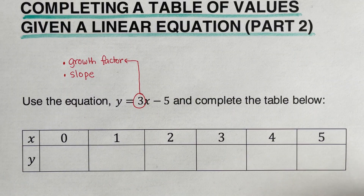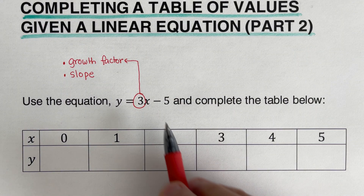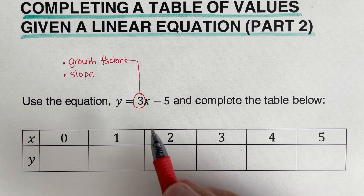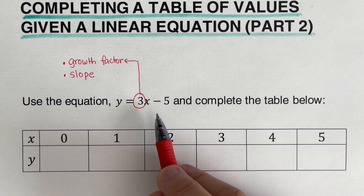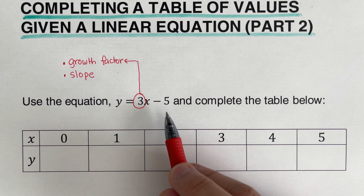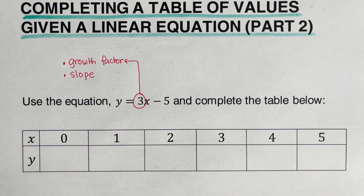On the other hand, this negative 5 is what we call the starting value or initial value. In math we call this the y-intercept — pretty much this is the value of y when x is zero.